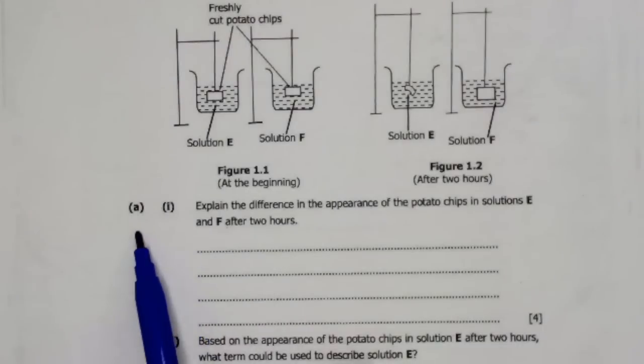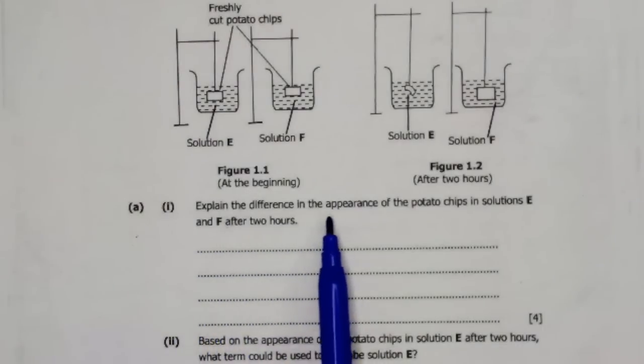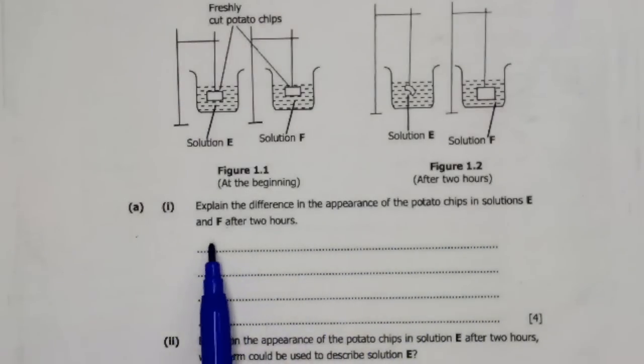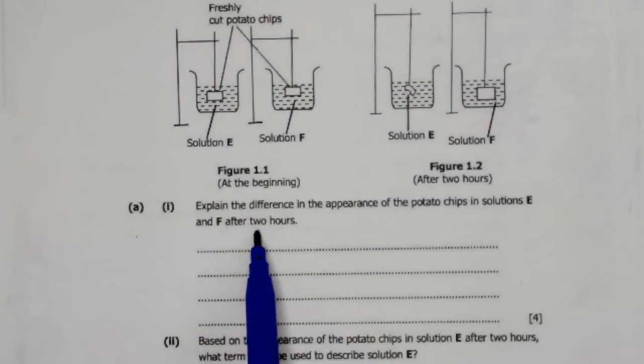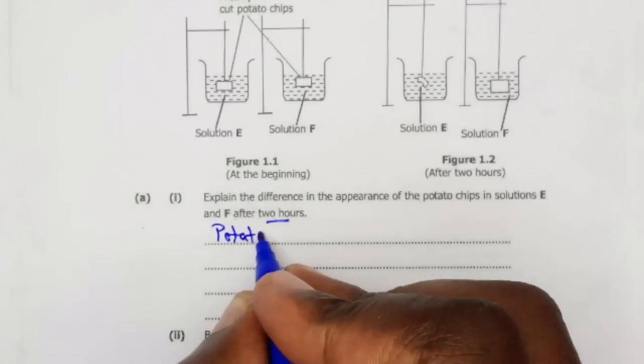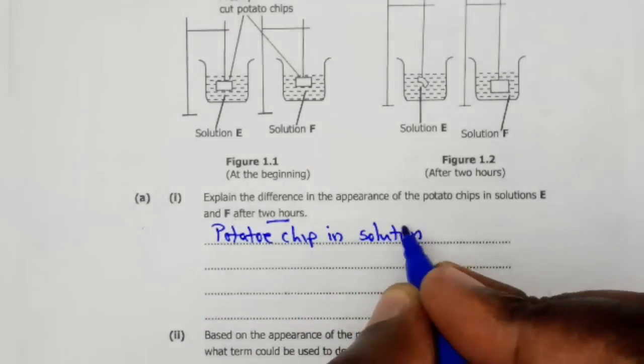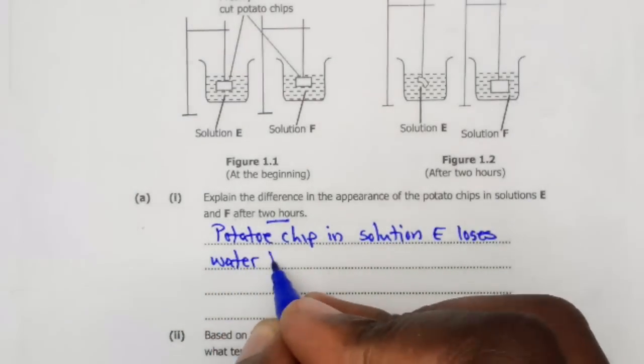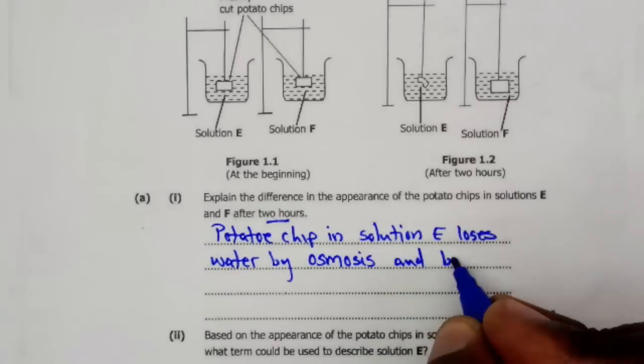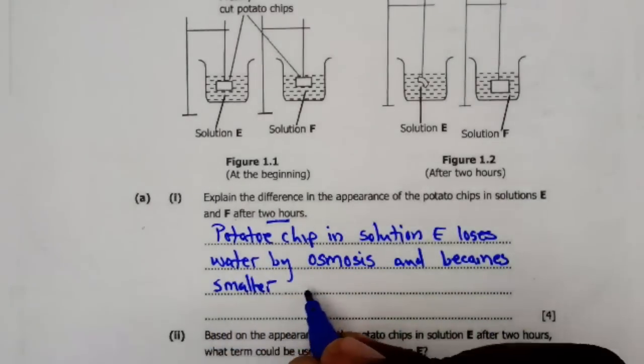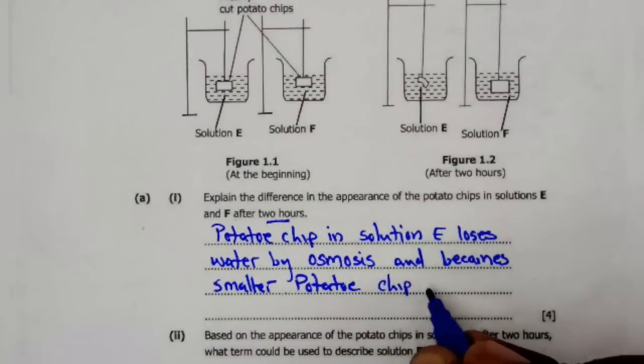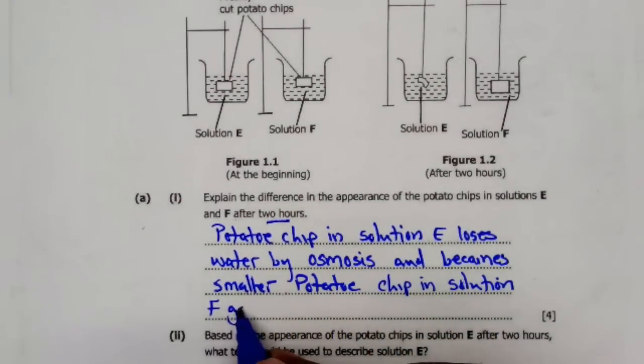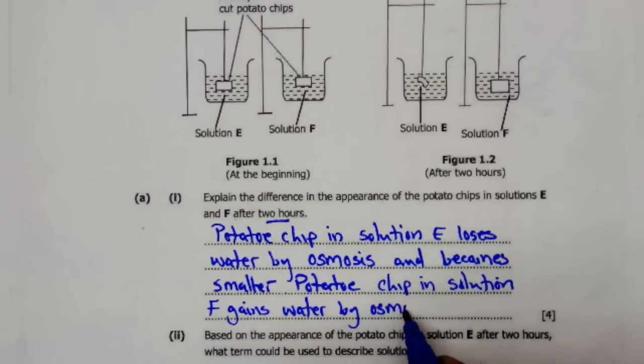Question A1: Explain the differences in appearances of the potato chips in solution E and F after two hours. After two hours, the potato chip in solution E loses water by osmosis and becomes smaller. Potato chip in solution F gains water by osmosis and becomes bigger.